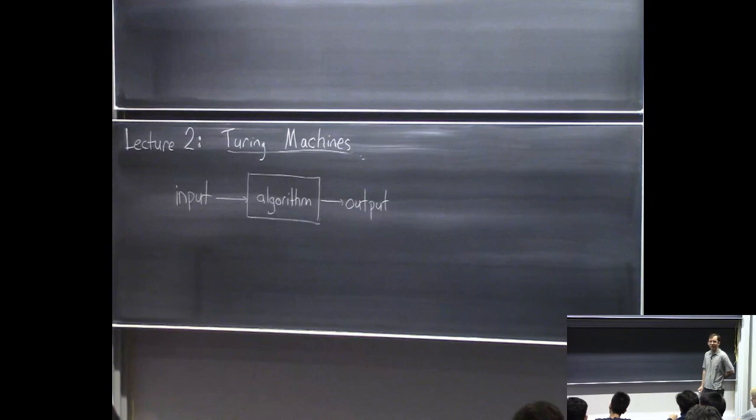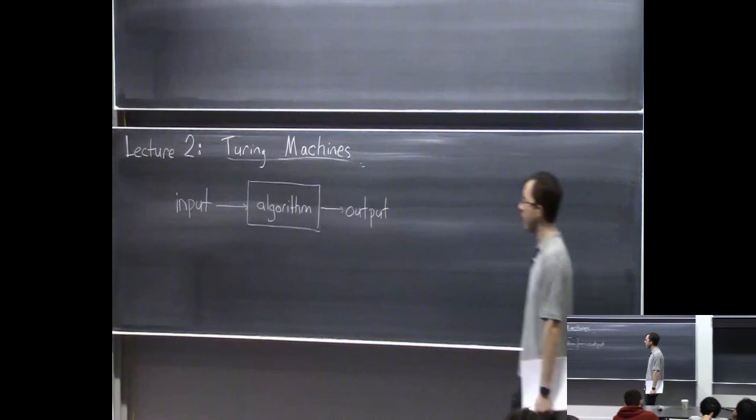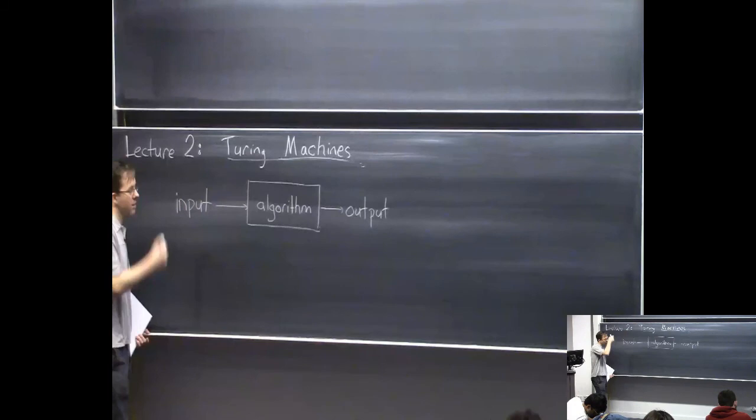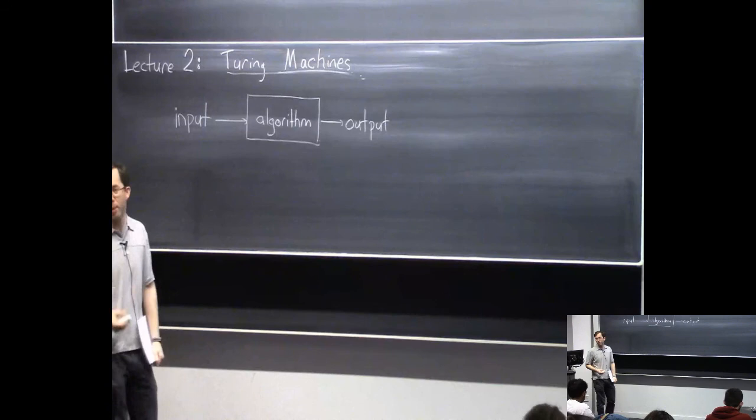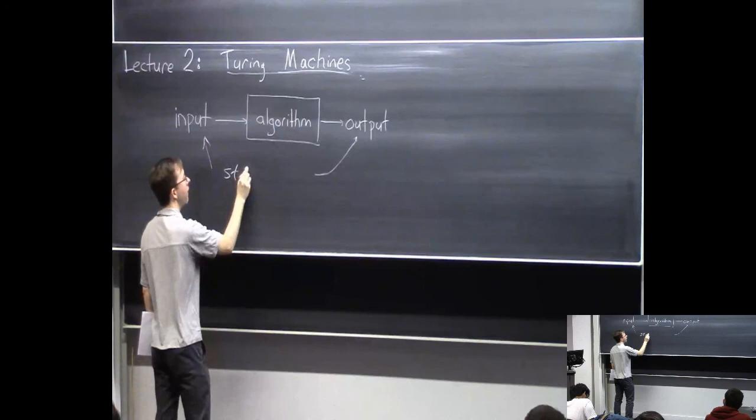Today's lecture will mostly be about Turing machines. Last time we got started on how to formalize computation so that we can study the computational complexity of algorithms. You have an input and an output, and the output is produced by an algorithm. Last time we talked about encoding mathematical objects as strings — you can encode pretty much anything as a string. The input and output are both going to be strings over some alphabet called sigma, usually 0 and 1, but it can be anything.